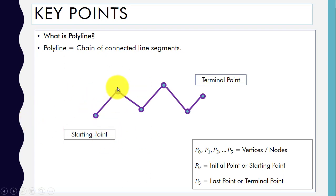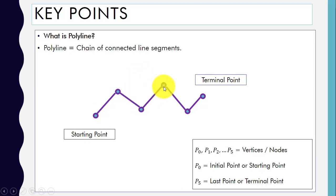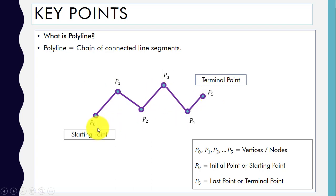Here is an example of a polyline. This is the starting point and this is the terminal point. These points are called nodes or vertices, and we denote them as P0, P1, P2, P3, P4, and P5. P0 is the starting or initial point, and P5 is the terminal or last point.